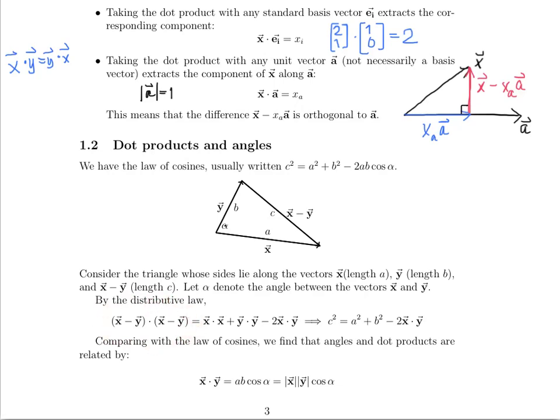The dot product is distributive by the second property that we listed. And so we can sort of foil the dot product over this subtraction. So we have x dotted with x plus y dotted with y. We also have minus 2x dot y. We know that x minus y dotted with x minus y is the same as c squared. It's the square of the length of that side.